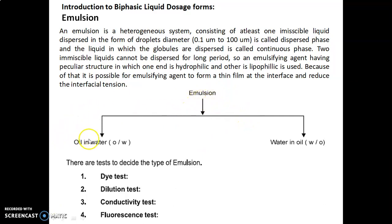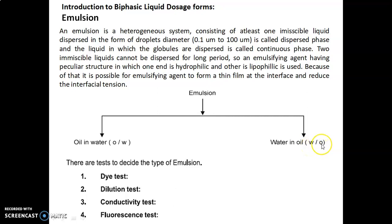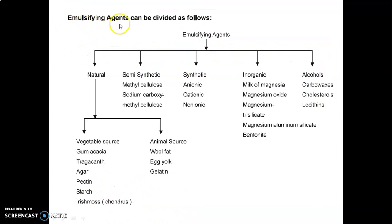The simple classification of emulsions is: oil in water (O/W) type and water in oil (W/O) type. In O/W type, oil is the internal phase while water is the external phase. In W/O type, water is the internal phase while oil is the external phase. There are four tests to decide the type of emulsion: the dye test, dilution test, conductivity test, and fluorescence test.